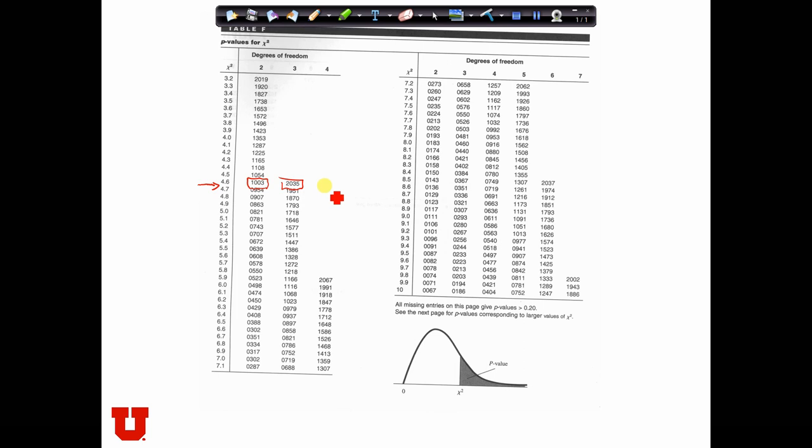Now, the table actually doesn't have the p-value for 4 degrees of freedom or 5 degrees of freedom. So how do we know what the p-value is in our case, where the test statistic is 4.6 and the degrees of freedom is 5? What we have to do is look at this footnote. What this footnote says is all missing entries on this page give p-values above 0.2.